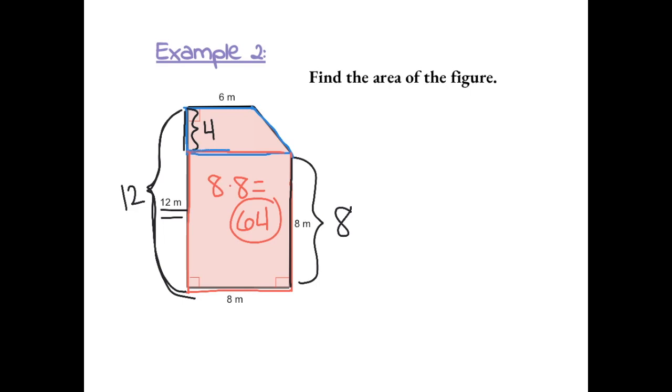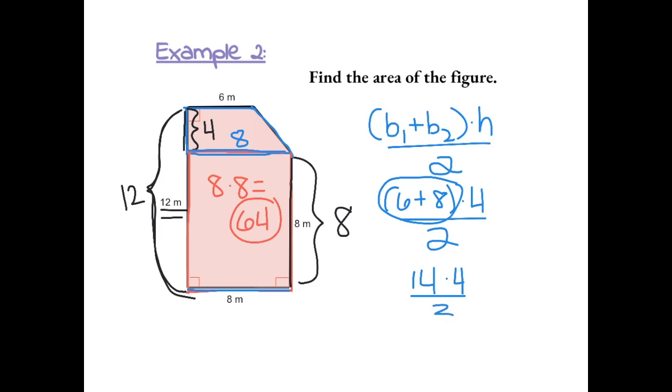The base here is the same length as this, which is 8. To find the area of the trapezoid, which is outlined in blue, we have to add up base 1 plus base 2 times the height and then divide it by 2. So base 1 and base 2 are 6 and 8 times the height is 4 and then divide it by 2. 6 plus 8 gives us 14 times 4 divided by 2. 14 times 4 gives us 56 divided by 2. And 56 divided by 2 gives us 28. So the area of the trapezoid is 28.